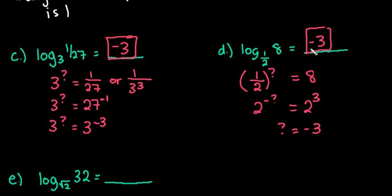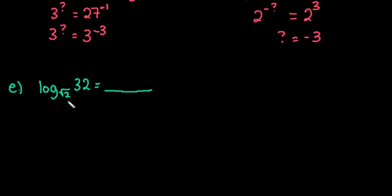And then our last one says that log square root 2 equals 32. So we're saying square root of 2 to what power equals 32. So I want to rewrite it so that they have the same base. 32 is really 2 to the 5th power because 2 times 2 is 4, 4 times 2 is 8, 8 times 2 is 16, and then 16 times 2 is 32. So it takes 5 twos to get to 32.